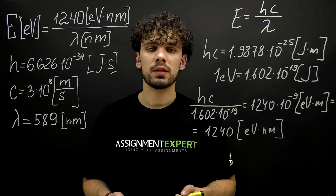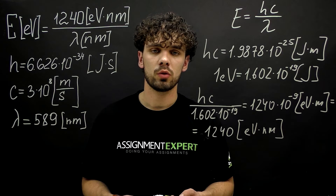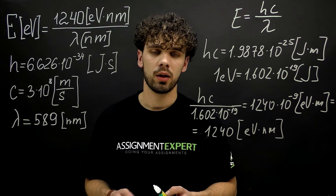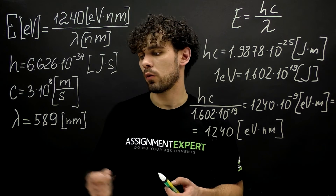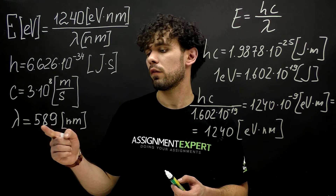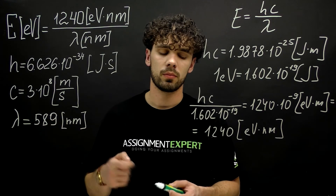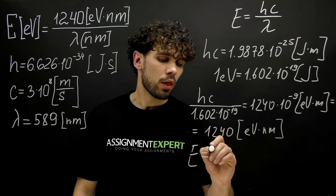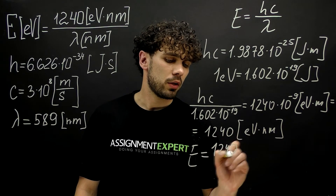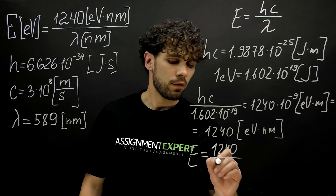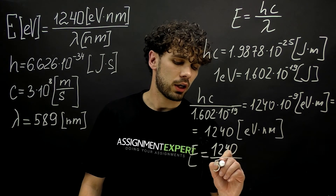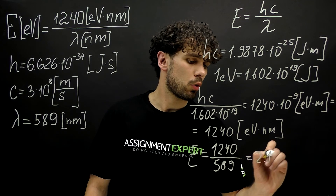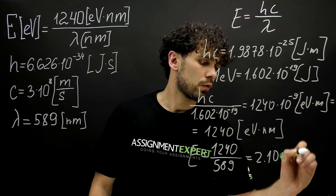As an example, let's find the energy of a photon produced by the orange colored light of a highway sodium lamp. The wavelength of such a photon is 589 nanometers. So the energy will be 1240 over 589, and the result is 2.105 electron volts.